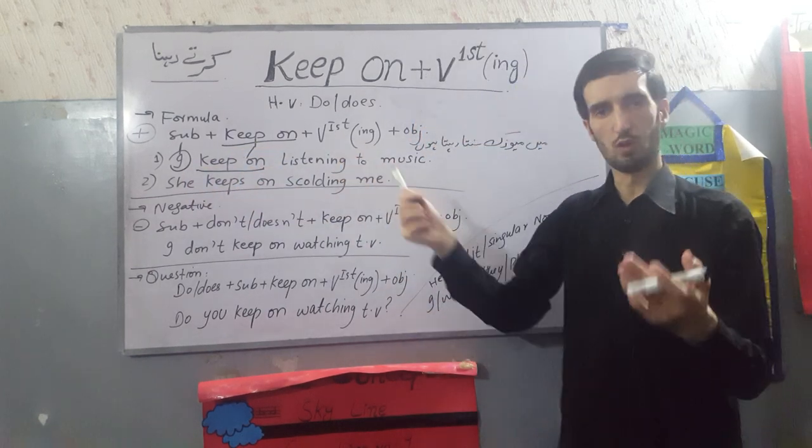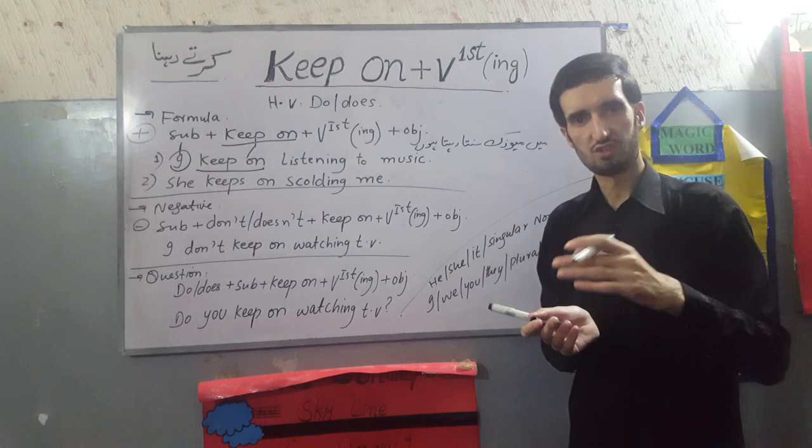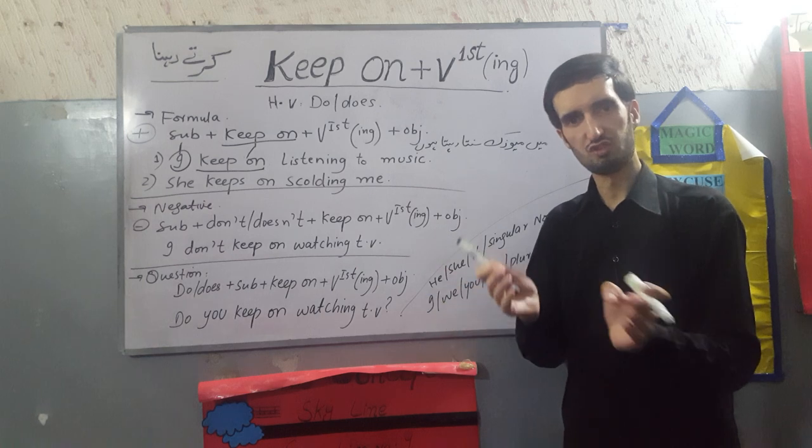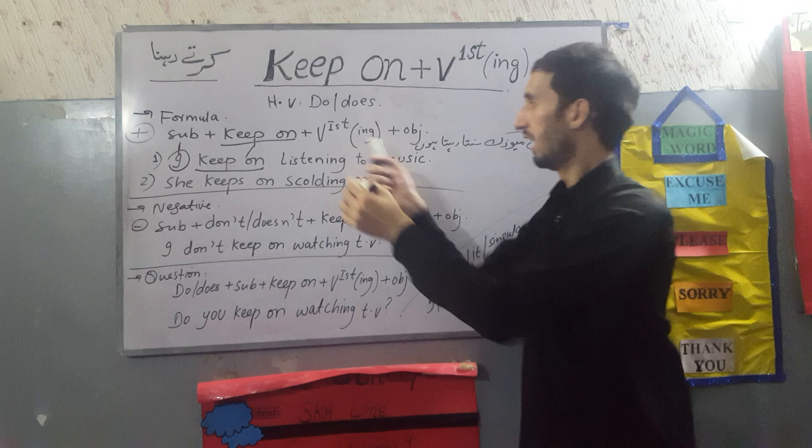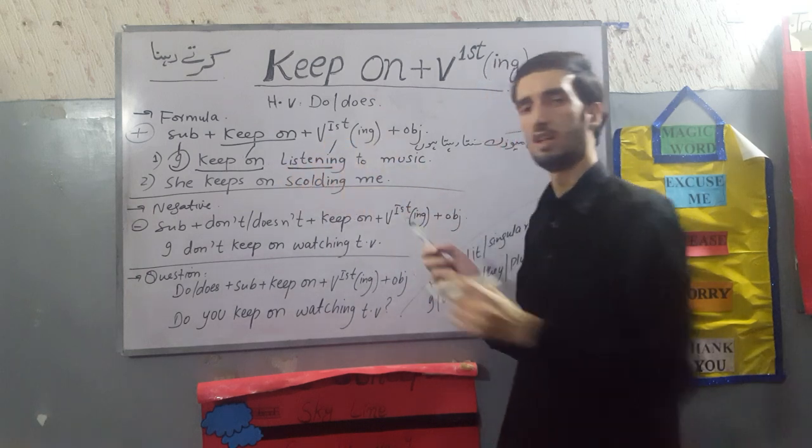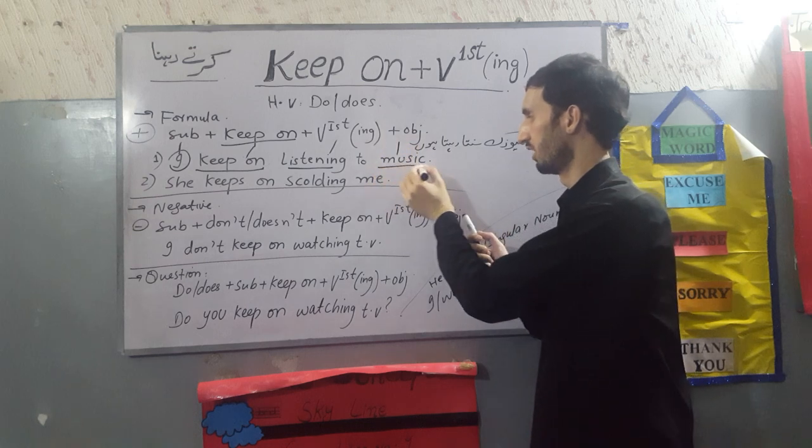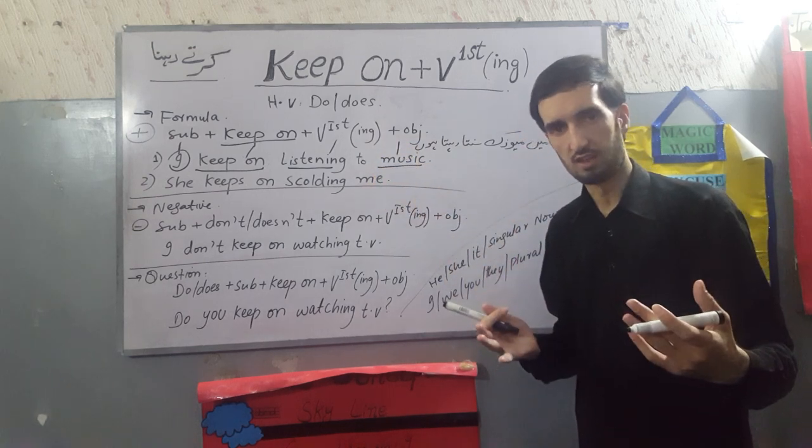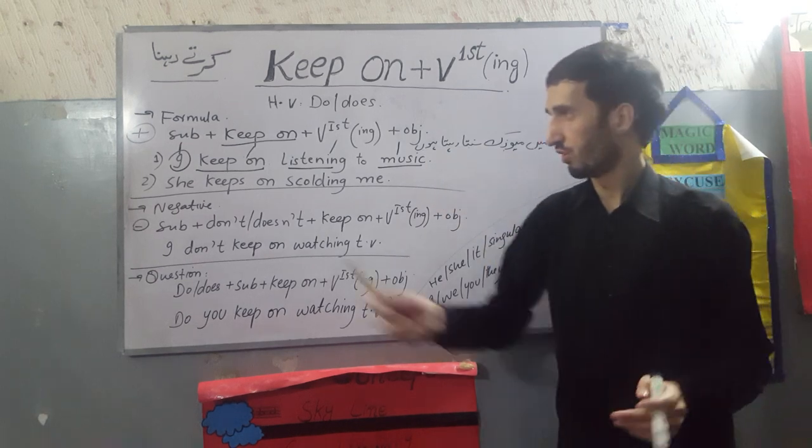After that, we have used ing form. Ing form means that the verb is ing. What will become? Working. Speak - speaking. This way. In our example, I have put listening. What is listening? Listening. Our object is music. I keep on listening to music.